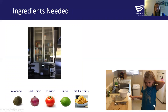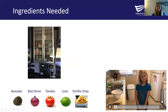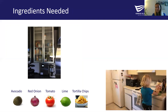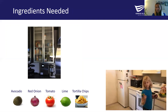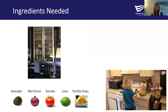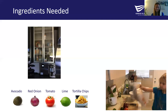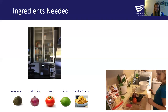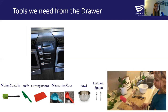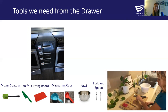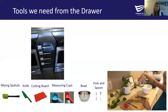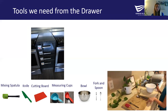The ingredients we'll need are avocados, red onion, tomato, a lime, and tortilla chips. Lily is bringing the ingredients over to our working station. The tools we'll need are a mixing spatula, fork, spoon, a cutting knife, our measuring cup, a bowl for mixing or serving, and our cutting board.